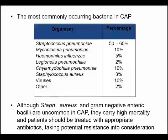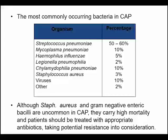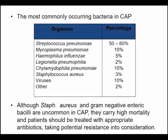The most common causative bacteria in community-acquired pneumonia is Streptococcus pneumoniae, which constitutes 50 to 60% of all cases of CAP, followed by Mycoplasma pneumoniae, which consists of 10% of cases. Chlamydia pneumoniae also accounts for 10%, and Haemophilus influenzae accounts for about 5% of all CAP cases.